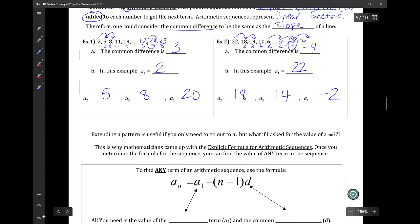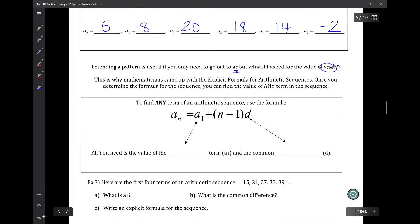Extending the pattern is useful if you only have to go a couple terms past where it leaves off. But what if I wanted the 700th term in the sequence? I'm not going to sit here and subtract 4 over and over 700 times. That is absolutely ridiculous.